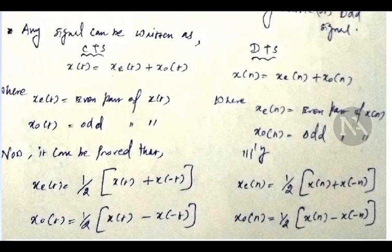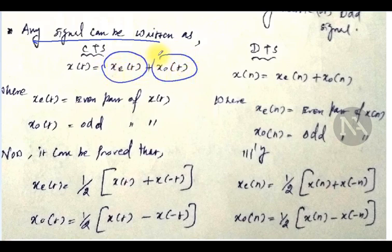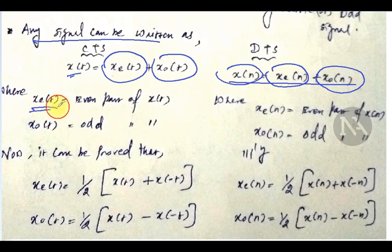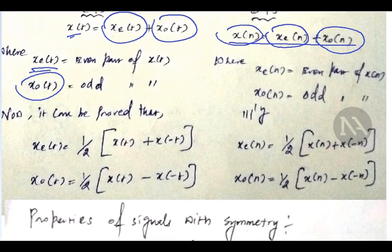Any signal can be represented as a summation of an odd and even signal. For a continuous time signal, x of t equals the even part of x of t plus the odd part of x of t. Similarly, for a discrete time signal, x of n is represented as the summation of the even and odd parts. x subscript e of t is the even part and x subscript o of t is the odd part of x of t.